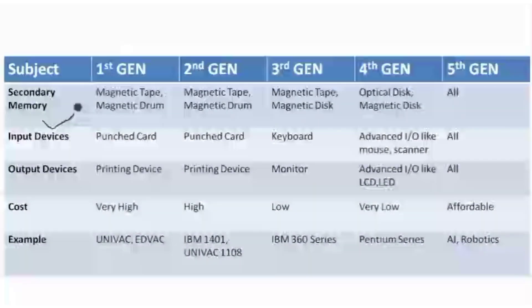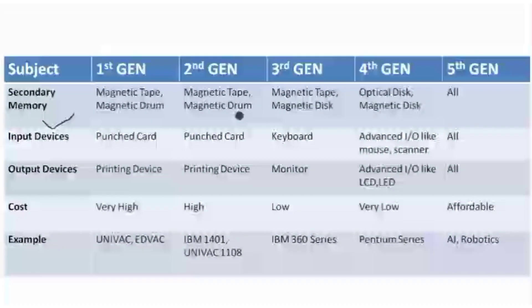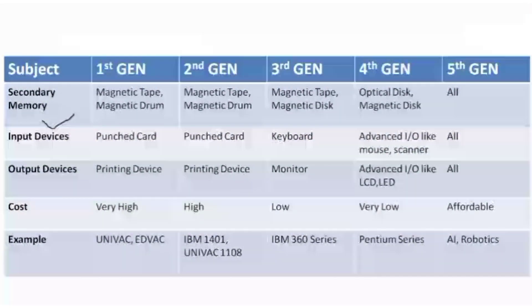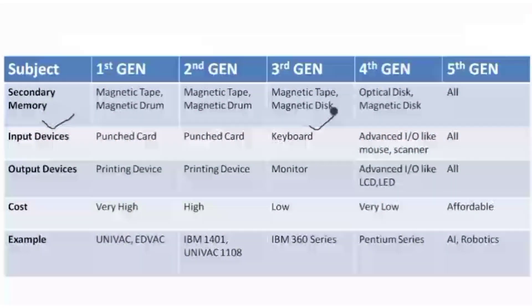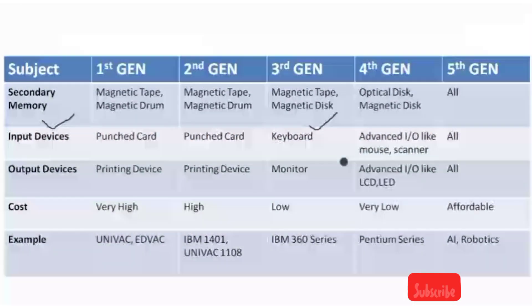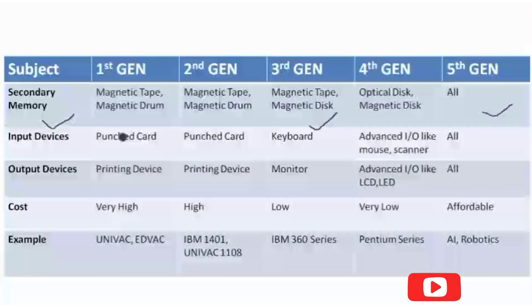The next property is secondary memory. In the first generation and second generation we used magnetic tapes and magnetic drums. In the third generation we started using magnetic disks along with tapes. Due to the popularity of magnetic disks, in the fourth generation we introduced optical disks. In the fifth generation there is no restriction — we can use any type of device we want.